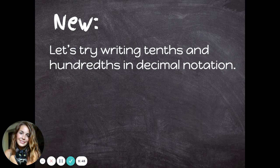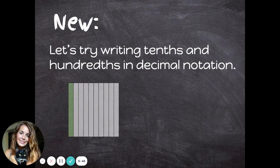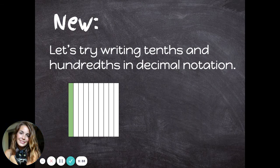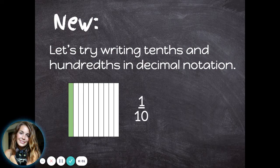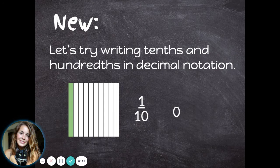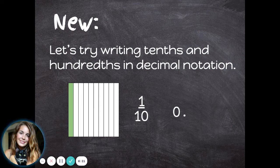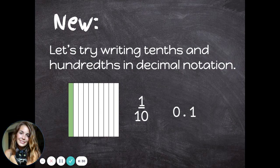Let's try writing tenths and hundredths in decimal notation. Here I have a picture of a shape that's divided into ten equal pieces with one of them shaded in, so this is showing one out of ten, or one-tenth. If I want to write one-tenth as a decimal instead of a fraction, I can put a zero in the ones place because I don't have any whole shapes shaded in. Then comes the decimal, and I have one-tenth, so I'm going to put a one in the tenths place. To write one-tenth as a decimal, I would write zero decimal one.